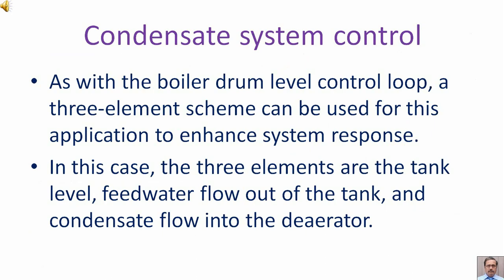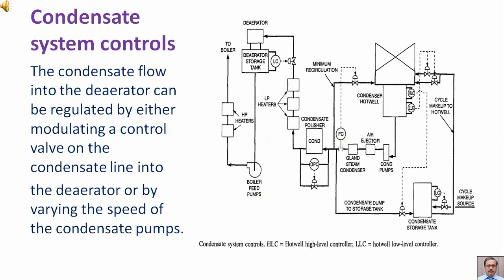In this case, the three elements are: the tank level, feed water flow out of the tank, and condensate flow into the deaerator. The condensate flow into the deaerator can be regulated by either modulating a control valve on the condensate line into the deaerator, or by varying the speed of the condensate pumps.